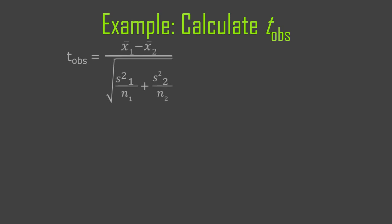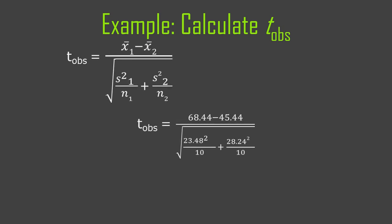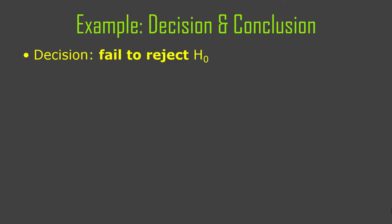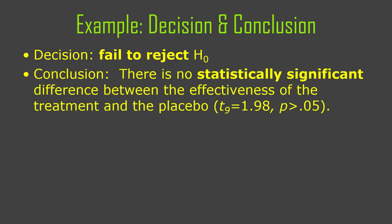We plug in all our values and find that our t-observed is a positive 1.98. So t-observed doesn't quite make it — no significant difference here. We are not in the rejection region; our difference between means was not as extreme as needed to reject the null hypothesis. We fail to reject the null. Our conclusion: there's no statistically significant difference between the effectiveness of the treatment and the placebo. t(9) = 1.98, p > 0.05.